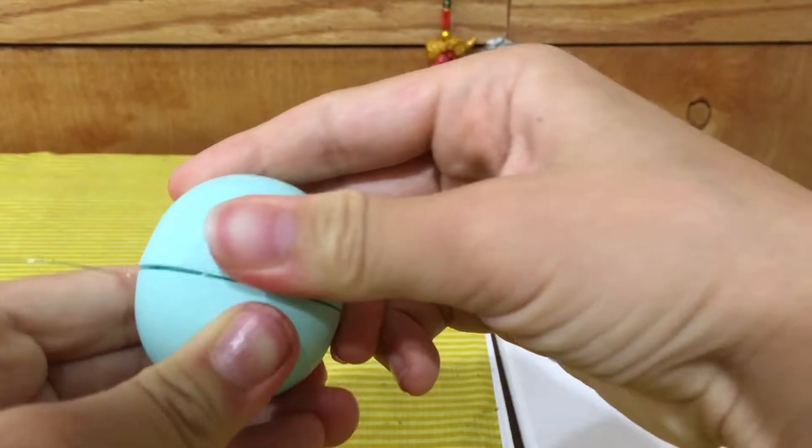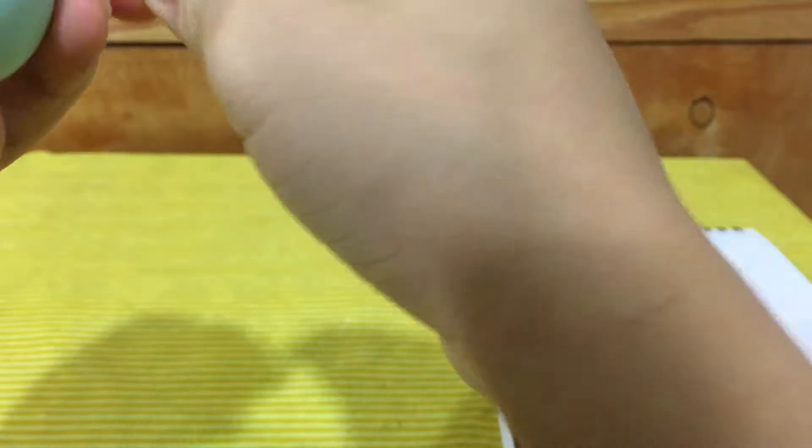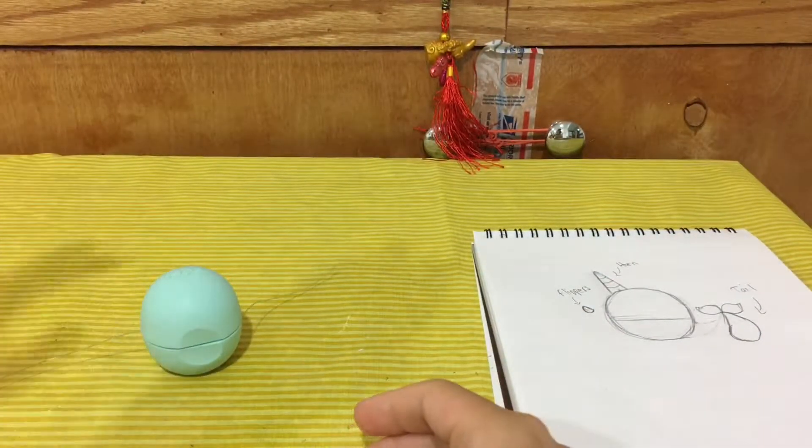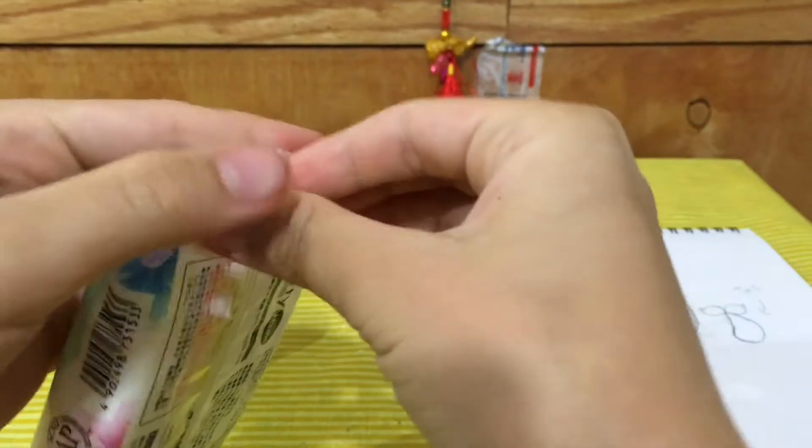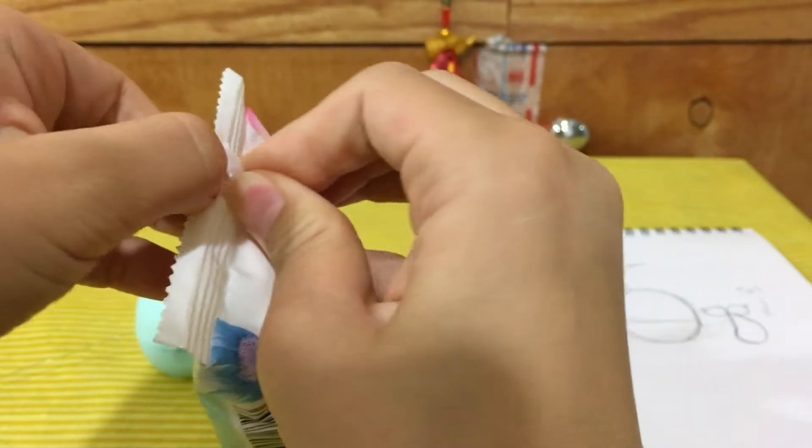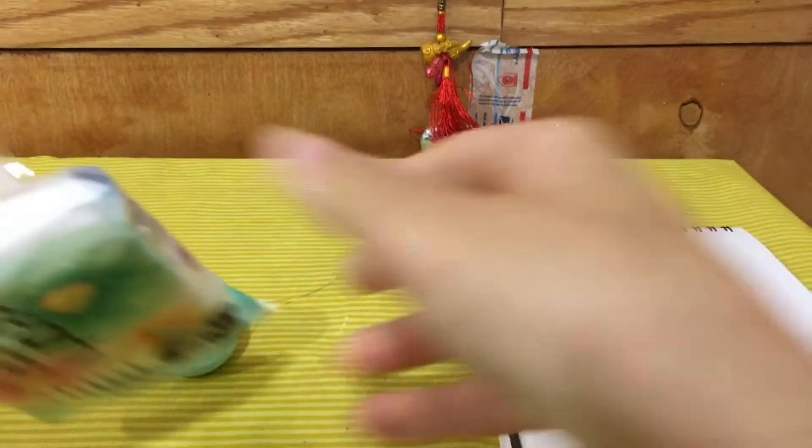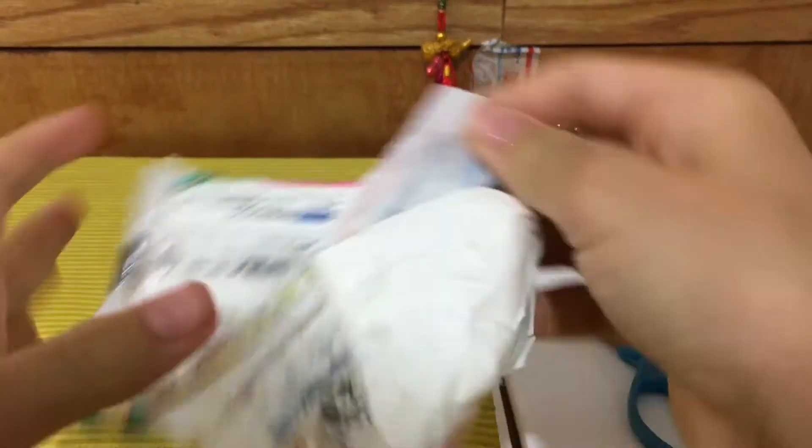This is it closed. Pull the string a bit so it positions itself, and make sure it's tight so it doesn't fall out while we're making it. Now take your paper clay and open it. I had a bit of trouble opening it, so I just used scissors to cut it - it'll be much easier.